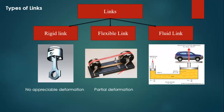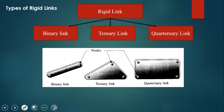Next we will discuss types of rigid links. Types of rigid links are divided into three categories: one is binary link, one is ternary link, and one is quaternary link. Binary link means the link which has only two nodes - node one and node two. Ternary link is the link which has three nodes: one, two, and three.